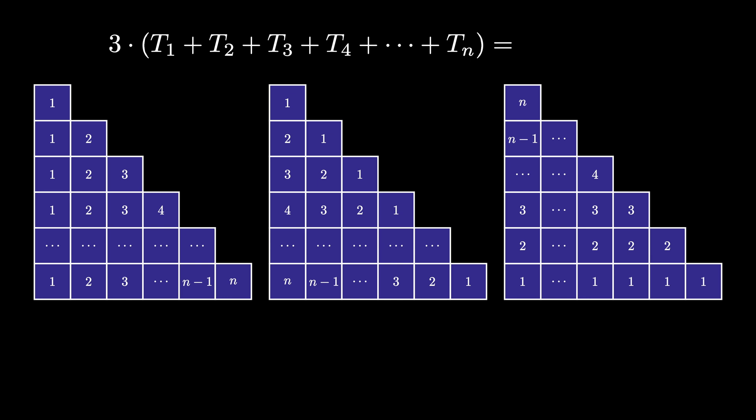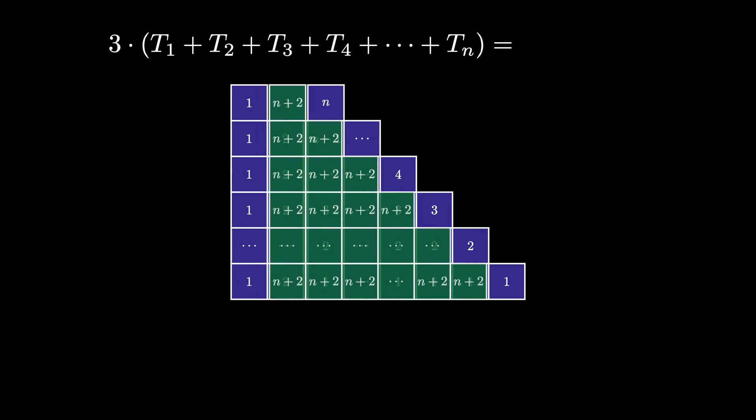Now we perform the trick. Stack all 3 of these triangular arrays together, aggregating the number of tokens at any spot. It turns out that in any single spot we always have exactly n plus 2 tokens on that spot.